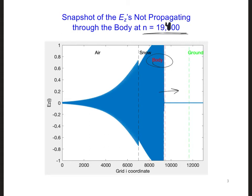Does this make sense? We calculated that only 72% of the wave should be reflected by the body, so why does there appear to be nothing propagating past the body?